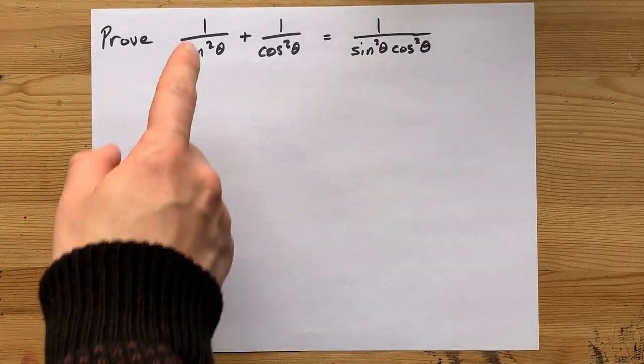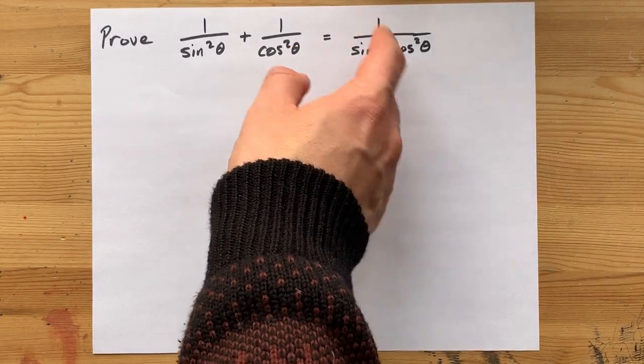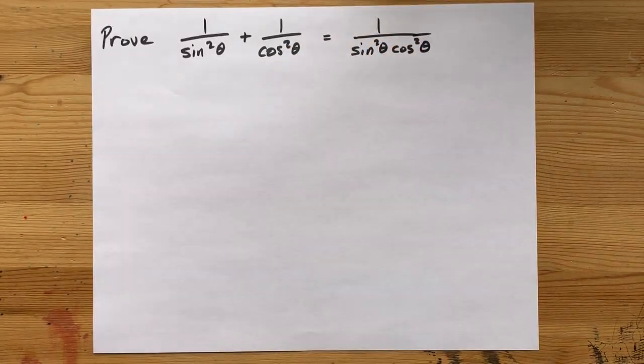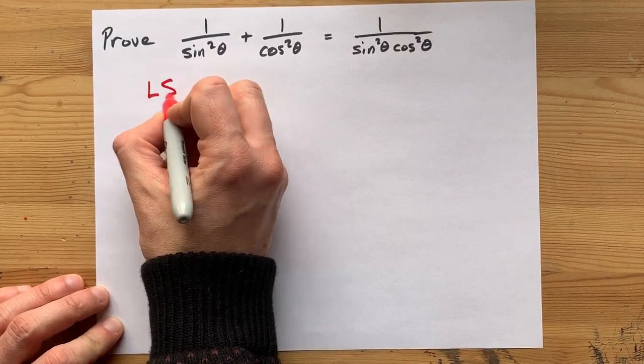Can we prove that 1 over sine squared plus 1 over cos squared is the same as 1 over sine squared times cos squared? Well, I know we can, but let me prove it to you.